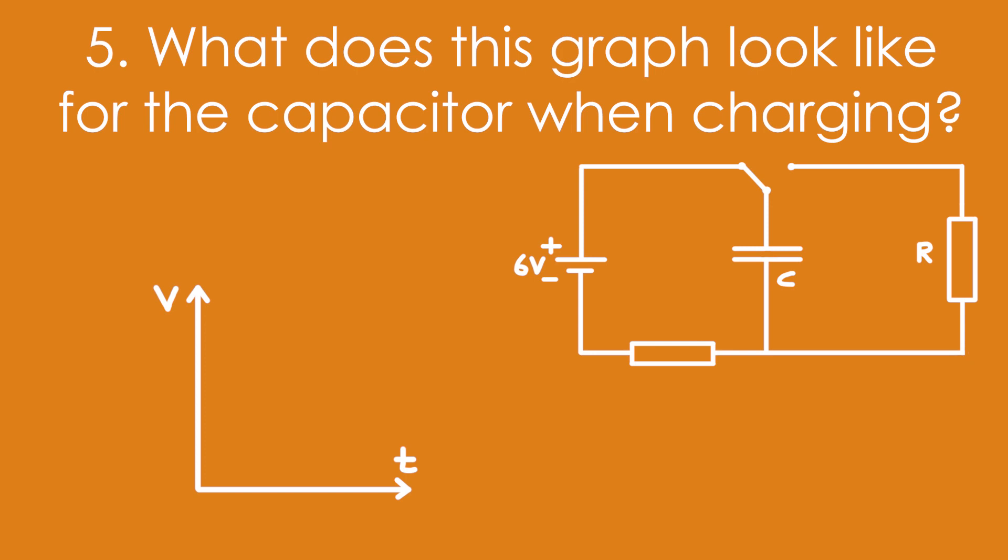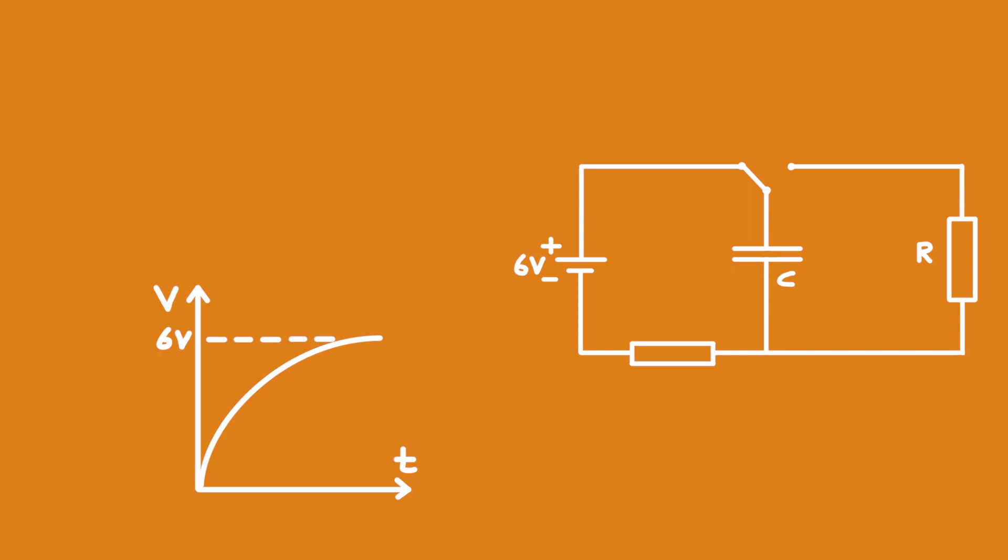Five, what does this graph look like for the capacitor when charging? It's exponential decay but flipped because it's charging, and it levels off at six volts because it's going to end up being the same PD as the power supply attached to it.